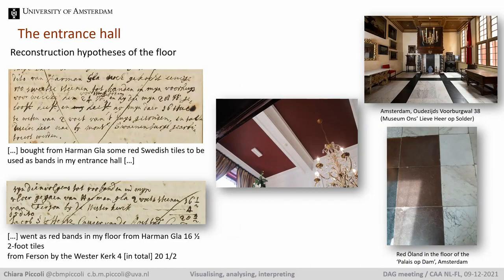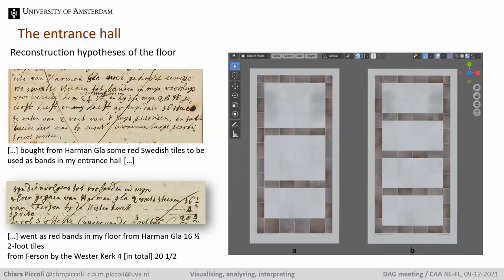Before talking about where these objects were placed in the room, I would like to briefly mention another aspect which the 3D reconstruction has allowed me to experiment on: the reconstruction of the floor. The Graaf notes the number and size of the tiles used in the entrance floor and gives some indication to understand their pattern. We also know that the style of the time favored symmetry, and therefore a typical combination was that with a coffered ceiling — as in this case — the floor tiles were arranged to mirror its partition. By combining this information in the 3D reconstruction, it was possible to propose two alternatives for the floor pattern where the number of tiles and type of stones correspond to what the Graaf noted in his almanacs.